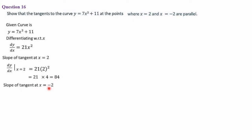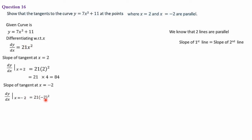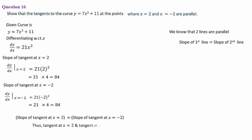Slope of the tangent at x = −2: dy/dx at x = −2 = 21(−2)² = 21 × 4 = 84. Both slopes are equal (84 = 84). Therefore the slope of the tangent at x = 2 equals the slope of the tangent at x = −2, so the tangents at x = 2 and x = −2 are parallel.